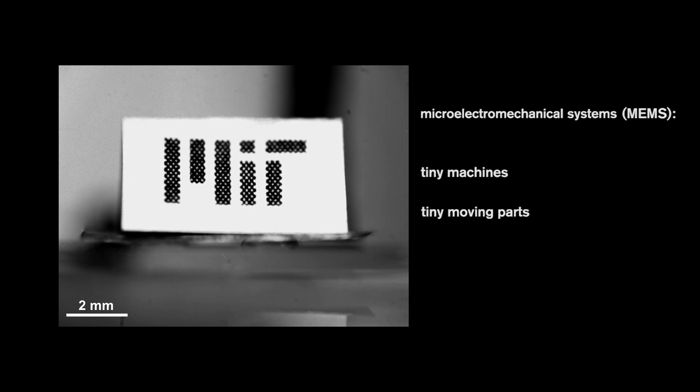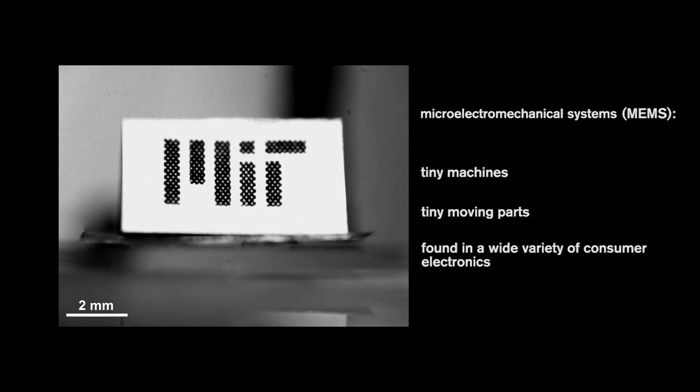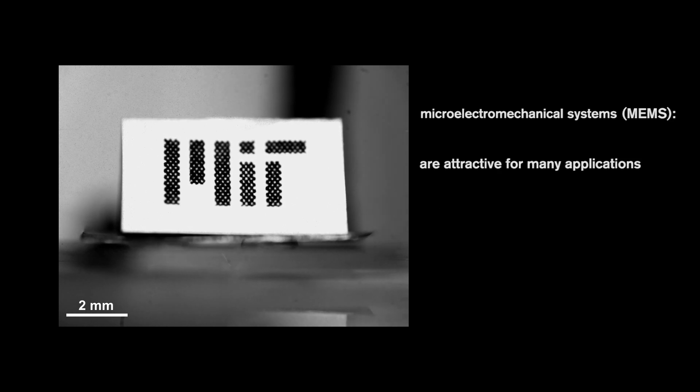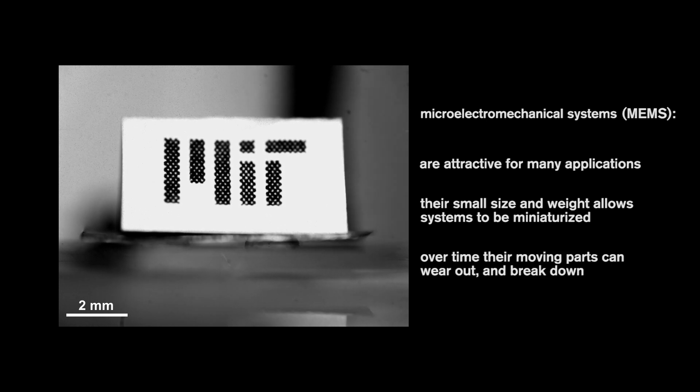MEMS are tiny machines with tiny moving parts that can be found in a wide variety of consumer electronics. They are attractive for many applications because of their small size and weight, which allows systems to be miniaturized. However, over time, their moving parts can wear out and break down as a result of friction.